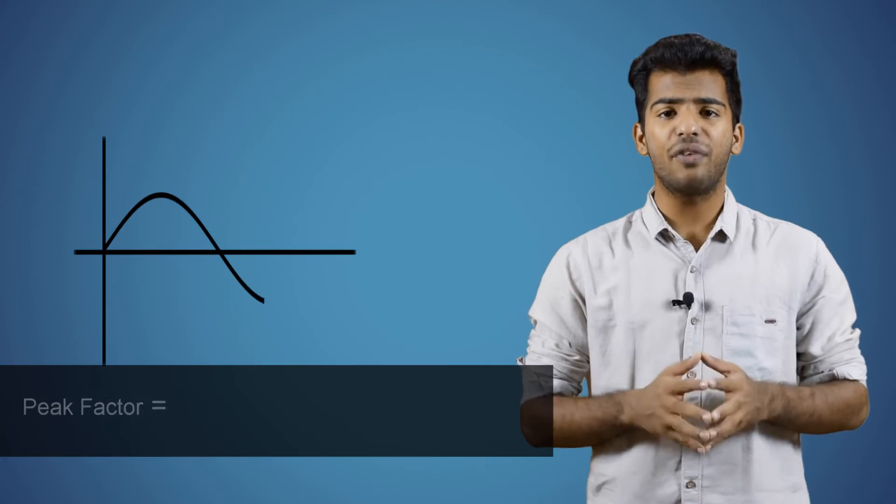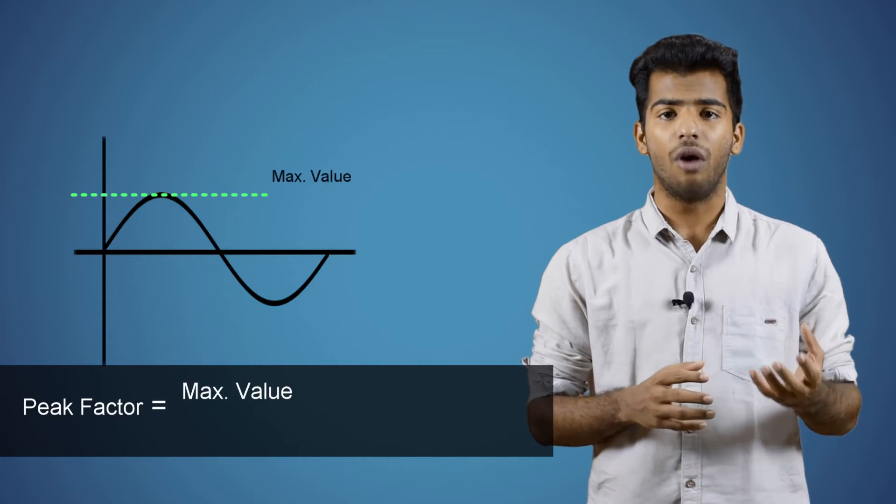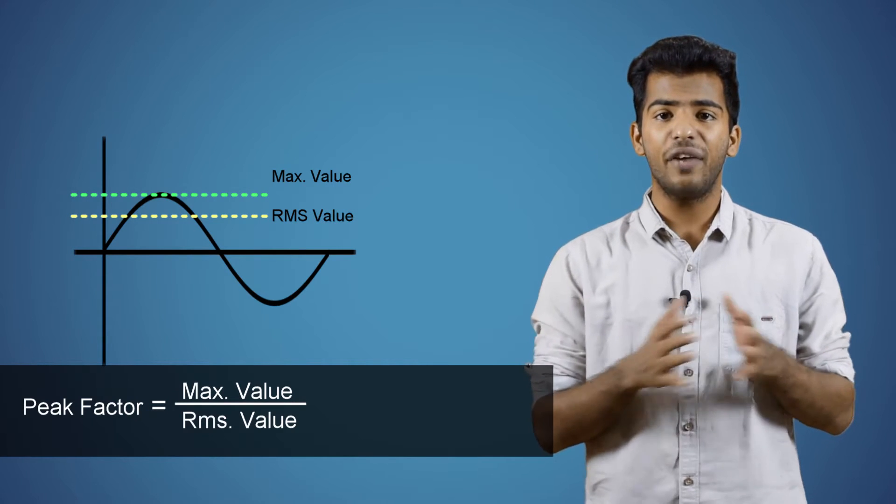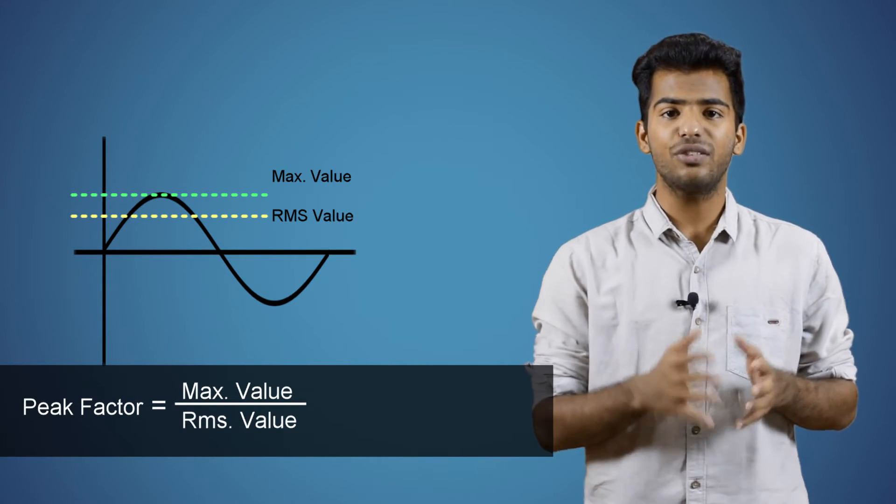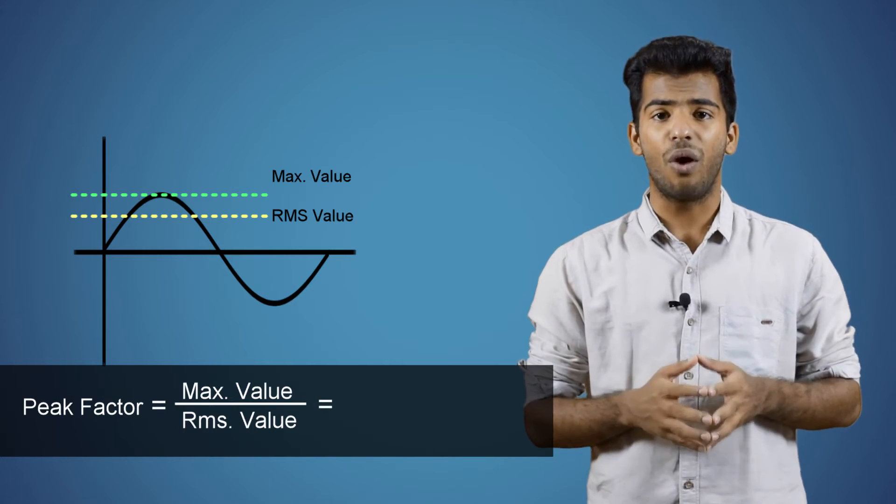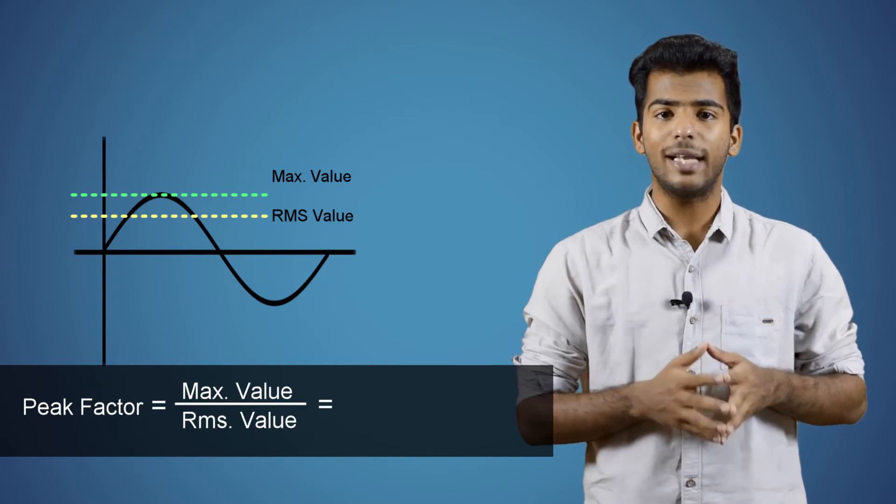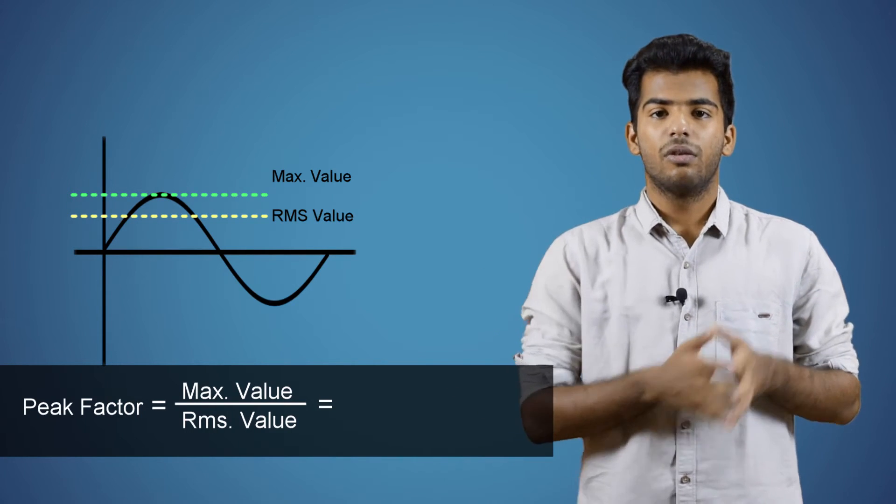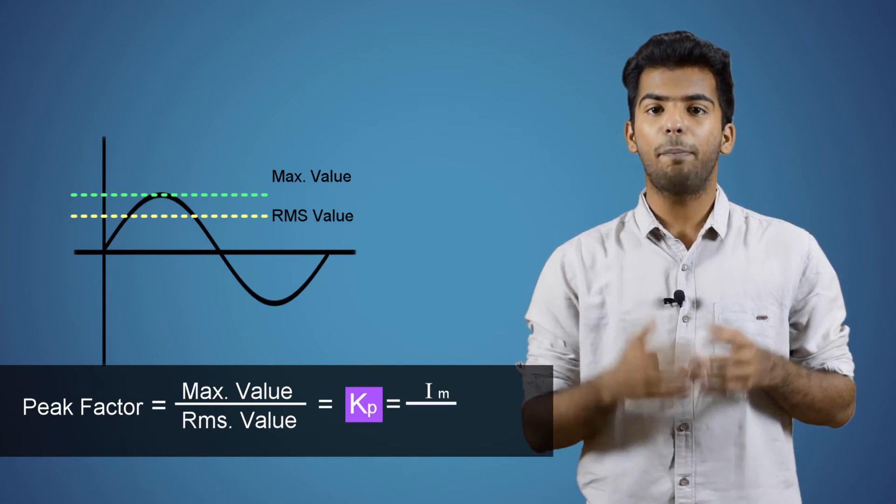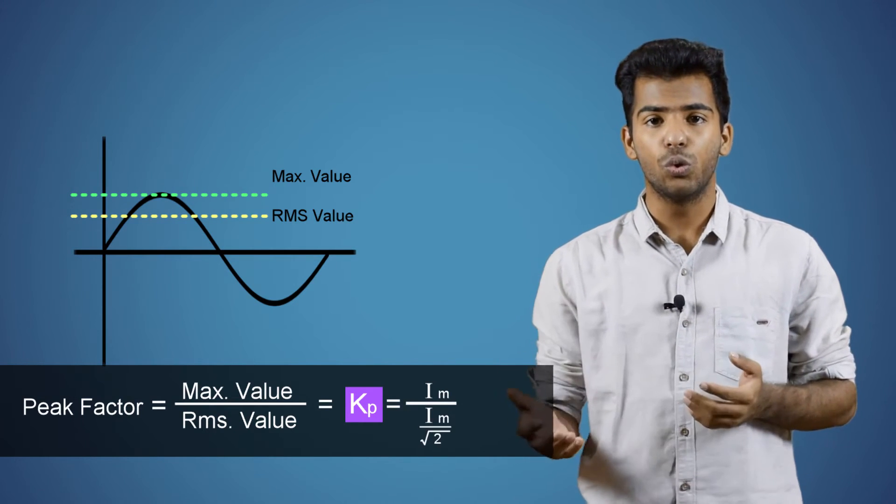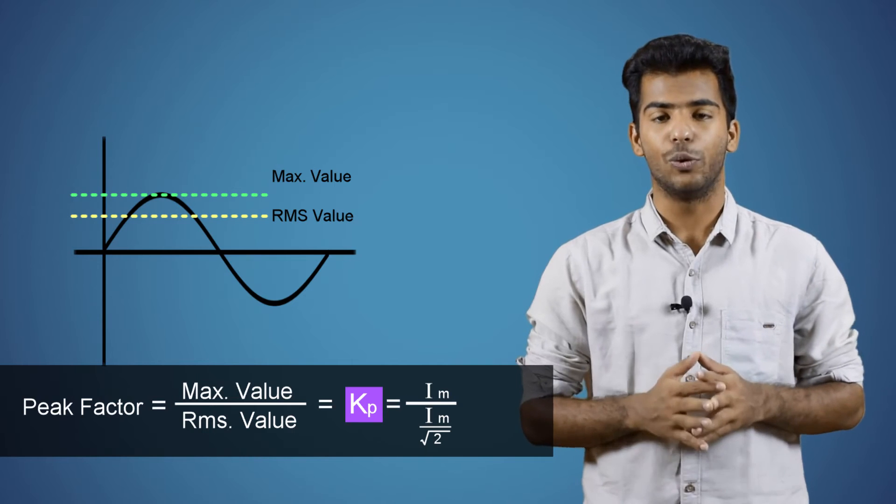Now, moving on to peak factor. This is defined as the ratio of maximum value or peak value to the effective value or RMS value of an alternating quantity. Similar to form factor, if we substitute the max value and RMS value in terms of maximum current, we have Im the peak or max current divided by Im by root 2, which is RMS value of current.